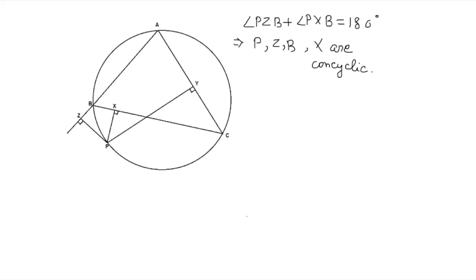Similarly, if you look at angle PZA, which is 90 degrees, and angle PYA, which is again 90 degrees by the construction, this is again 180 degrees. So another thing that we derive is these points P, Z, A, Y are also concyclic.